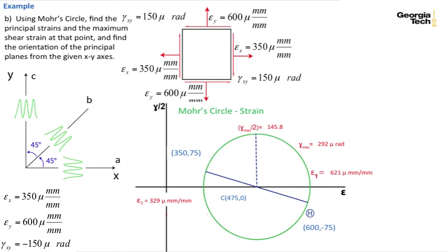The last thing I want to do is find the orientation of the principal planes from the xy axis. So let's take from the horizontal face this angle 2 theta sub p on Mohr's circle. And so sine of 2 theta sub p is going to be equal to the opposite side which is 75 over the hypotenuse which is the radius which is 145.8. And so if you calculate that out that gives you 2 theta sub p equals 30.96 degrees.